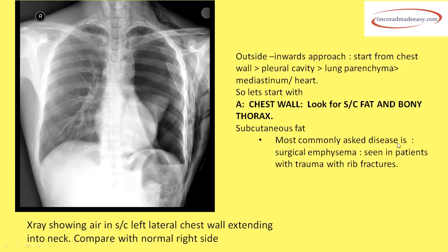The most commonly asked disease in the chest wall is surgical emphysema, which is seen in patients with trauma and rib fractures. On X-ray, the normal side has no air, while the abnormal side shows air in the subcutaneous tissues reaching up to the neck. Whenever there is surgical emphysema, be alerted about an underlying rib fracture or pneumothorax.